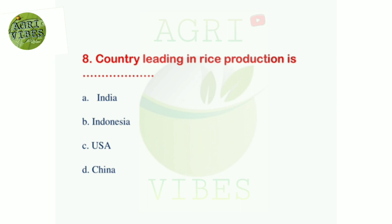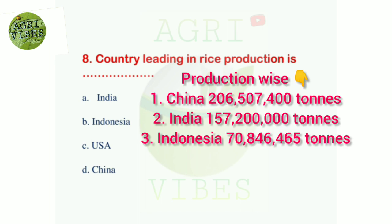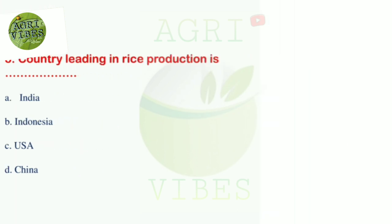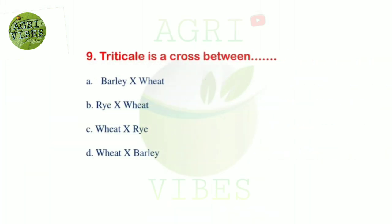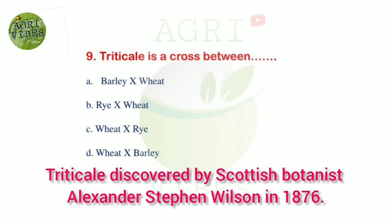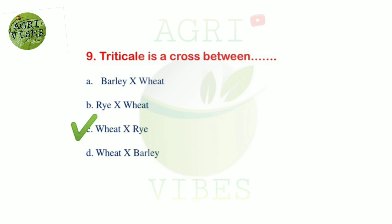Next question: country leading in rice production is — options: India, Indonesia, USA, and China. Correct answer is option D, China. Sequence of production: first rank China, second India, third Indonesia. Next question: triticale is a cross between — options: barley cross with wheat, rye cross with wheat, wheat cross with rye, and wheat cross with barley. Correct answer is option C, wheat cross with rye.